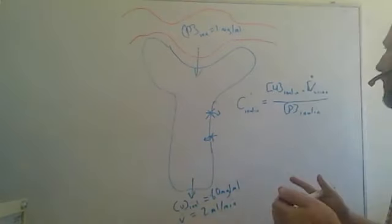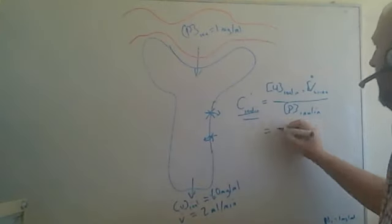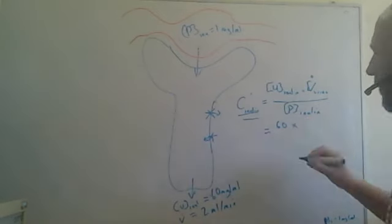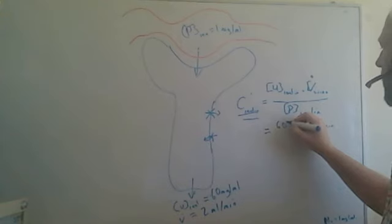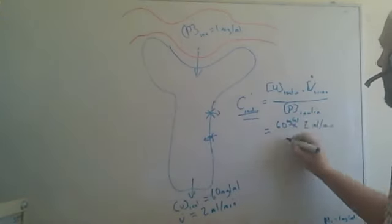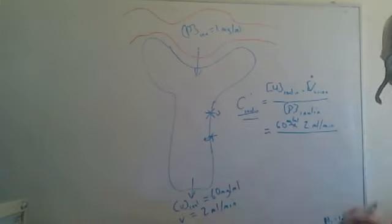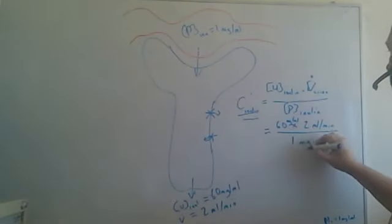Now if we substitute these values into the clearance equation, we get a value of the urine concentration is 60 multiplied by the flow rate which is 2, so we've got mls per minute here. We've got of course mg per ml over the plasma concentration of inulin, which as we look at that is 1 mg per ml.